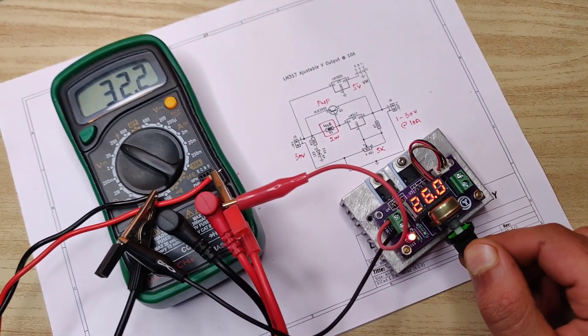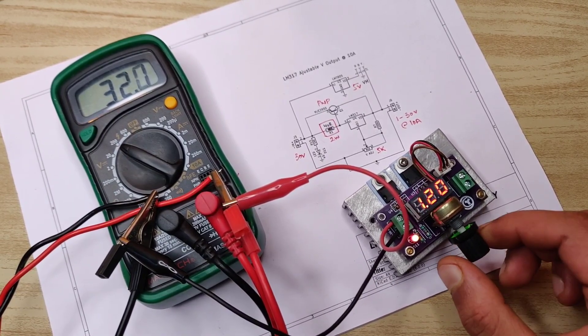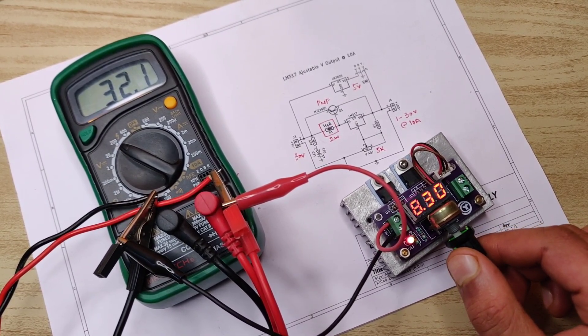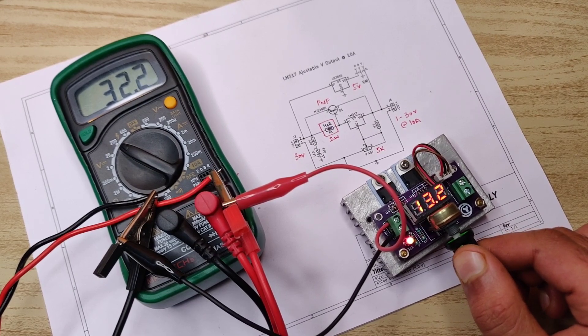As you can see, output can be set to any range from 1 to 30 volts but with 1.5 ampere. Let's set the output, suppose on 12 volts.